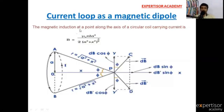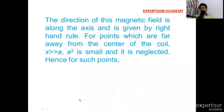The magnetic induction at a point along the axis of this magnetic field is along the axis and is given by the right-hand rule. The direction of this magnetic field along the axis is given by the right-hand rule.